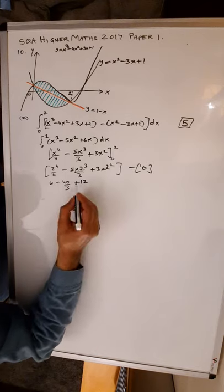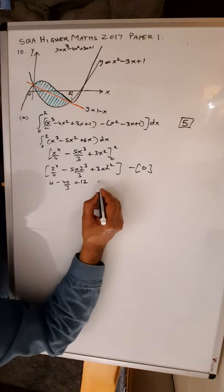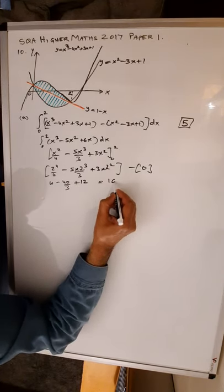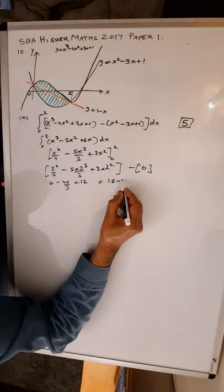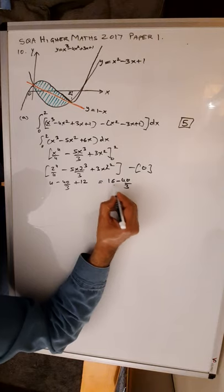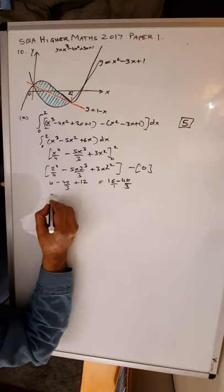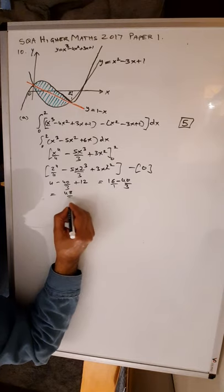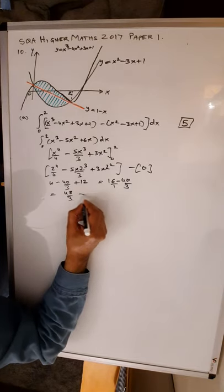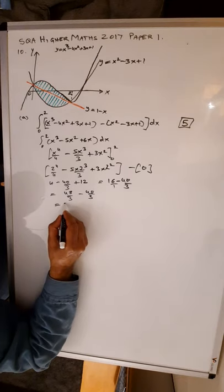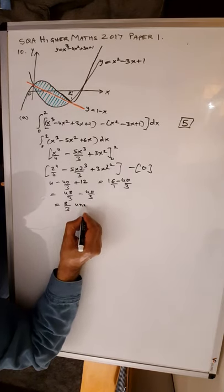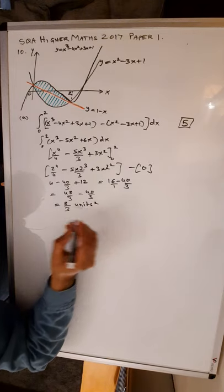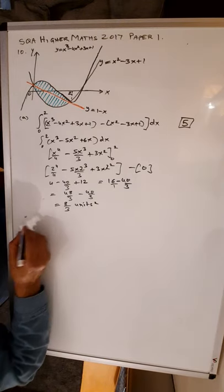Adding these up gives 16 minus 40 over 3. Multiplying 16 by 3 gives 48 over 3, minus 40 over 3, which gives an answer of 8 over 3 units squared for the area between the two curves.